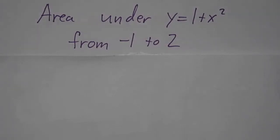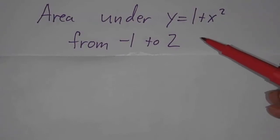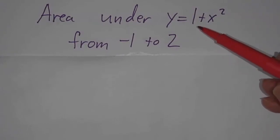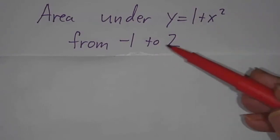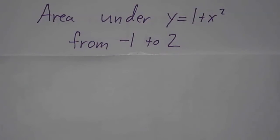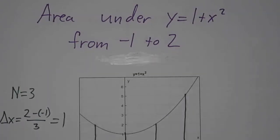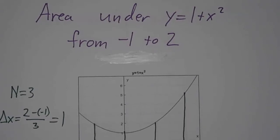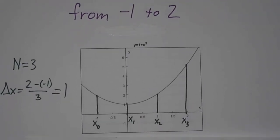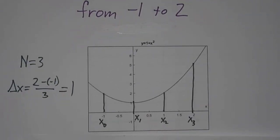In this video, we're going to do an area problem four times. We're going to figure out what is the area under the curve y equals 1 plus x squared from negative 1 to 2 by breaking it up into three pieces. Three isn't that accurate, but we'll do what we can. We're going to do it with right endpoints, then left endpoints, then the trapezoidal rule, and then midpoints.